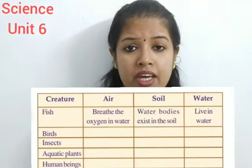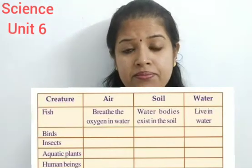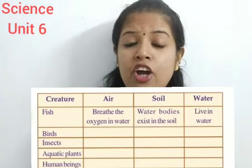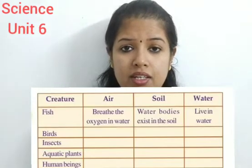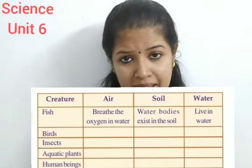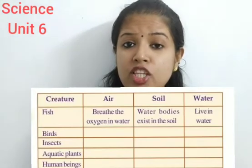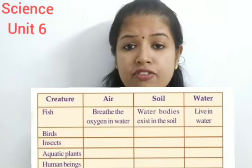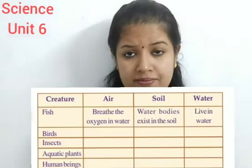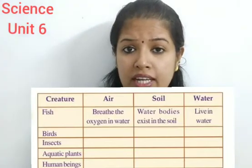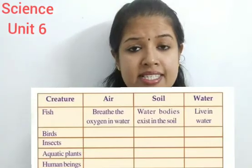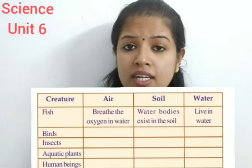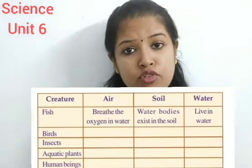You can see a table in your textbook which shows creatures' names and how they are dependent on air, soil, and water. If you look at fish and aquatic plants, they breathe oxygen or air present in the water. The water bodies exist in soil, and they live in water — they require water for their existence.